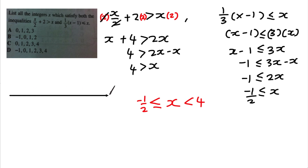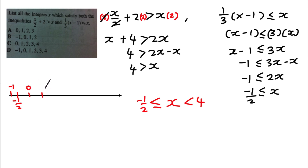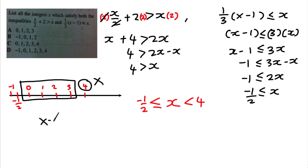Let me draw a number line. Negative 1/2 is actually −0.5, which sits between −1 and 0. Since x must be bigger than −0.5, and we need integers, the nearest integer is 0. So the integers are 0, 1, 2, 3. Can we take 4? No — because the symbol says x must be strictly less than 4, so we cannot include 4. Our integers are 0, 1, 2, and 3.